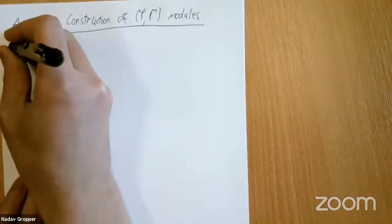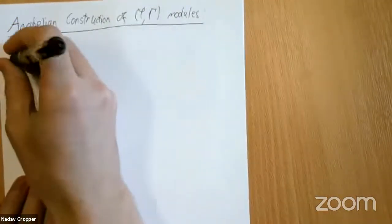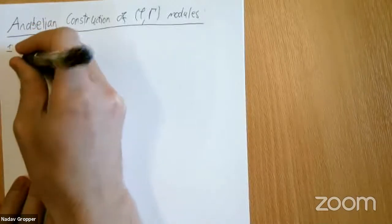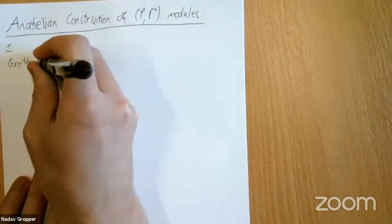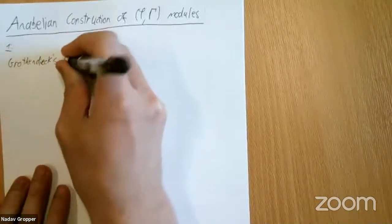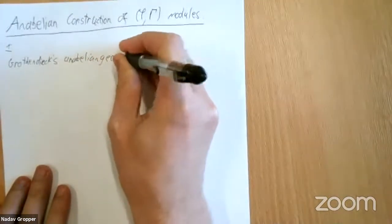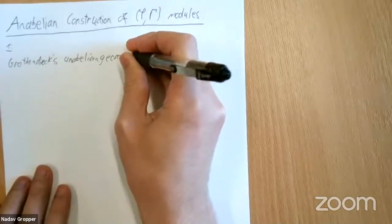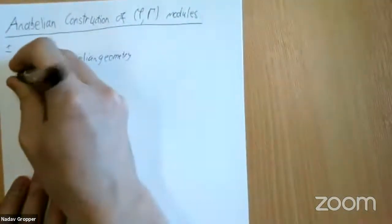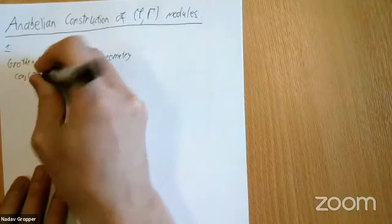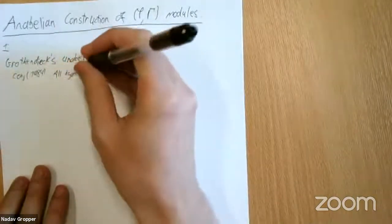The first thing I want to talk about is what is anabelian geometry. This story begins from Grothendieck's anabelian conjecture, and the main idea of anabelian geometry is that you can say a lot about a variety from its fundamental group. So the first conjecture is that all hyperbolic curves over number fields can be completely determined by their fundamental group.